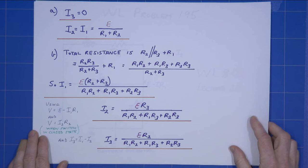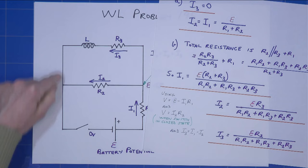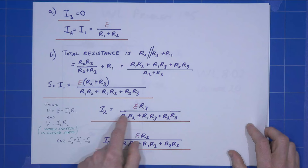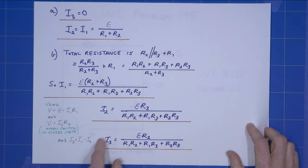For i2, we use the V equals E minus i1r1, and V equals ir2, because when the switch is closed, all this is at zero volts, and that gives us i2 equals this expression here. i3 is simply i1 minus i2, and so it must be this expression here.